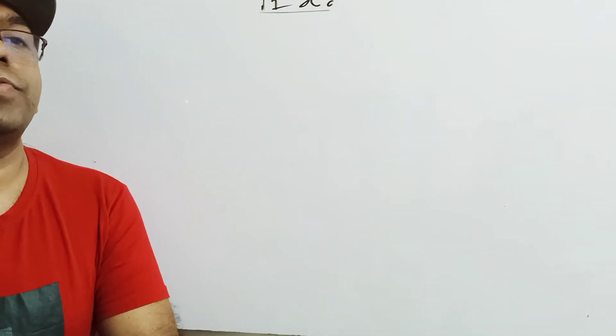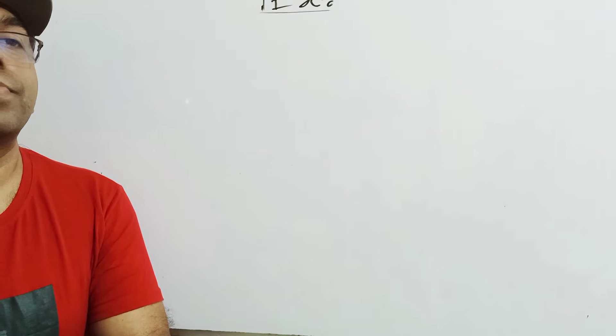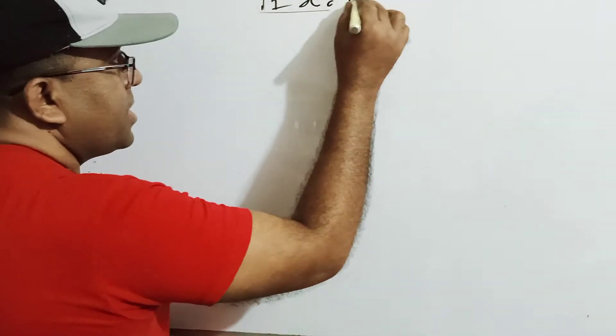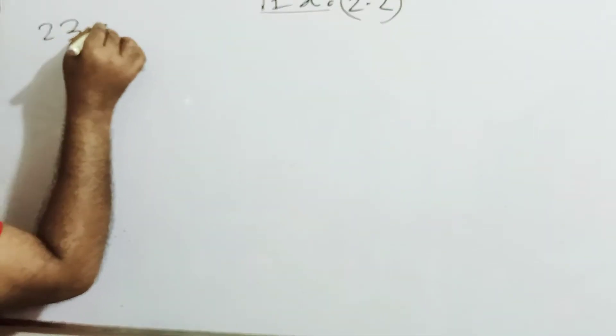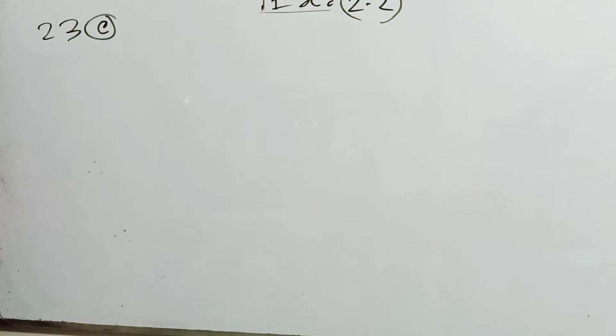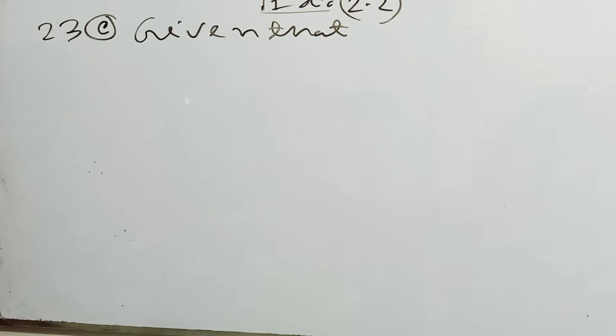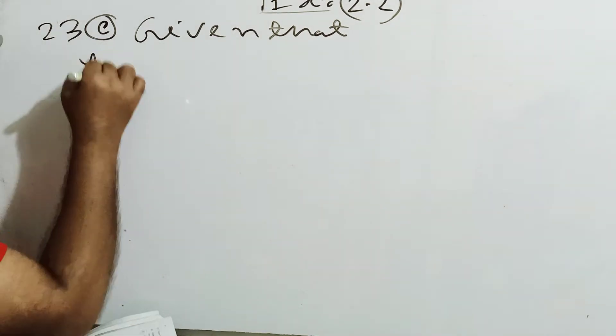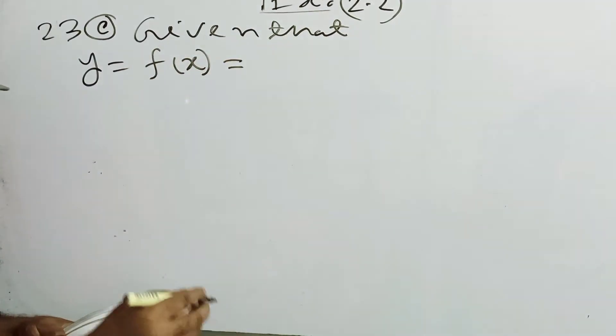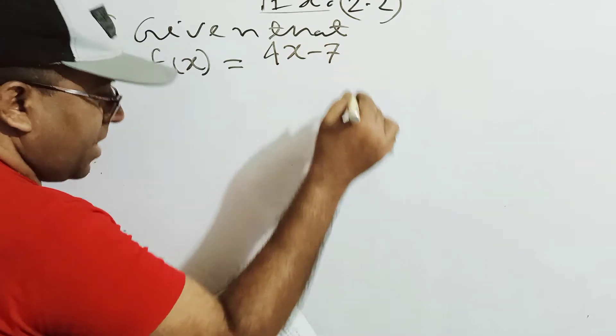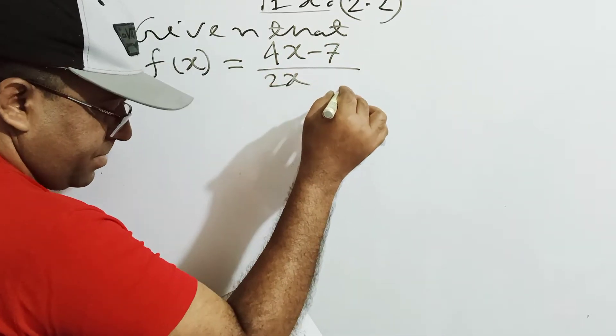Let's do Exercise 2.2, problem 23C. The last method has said number 23C. Given that y equals f of x, where f of x equals (4x minus 7) over (2x minus 4).